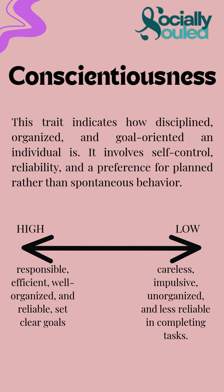The second is conscientiousness. This dimension indicates how organized, disciplined, and goal-oriented a person is. High conscientiousness involves responsibility, reliability, and strong self-control, whereas low conscientiousness is linked to impulsivity and disorganization.